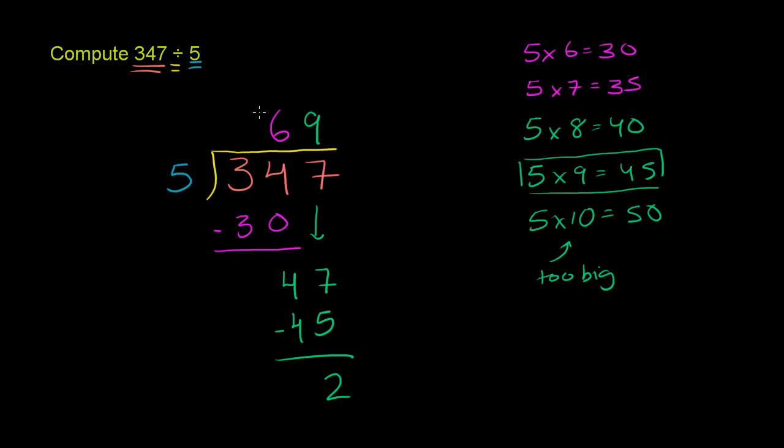It is equal to 69. But it doesn't go evenly into 347. There's something left over. There's a remainder.